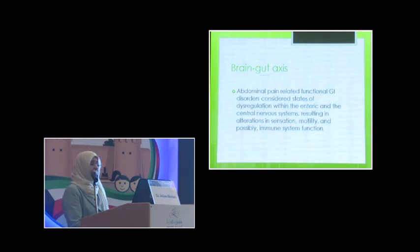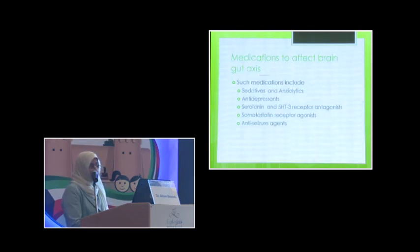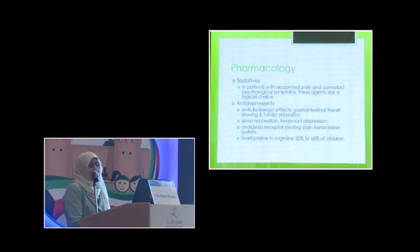The next category of medication deals mostly with the brain-gut axis. The idea is that abdominal pain-related functional gastrointestinal disorders are considered a state of dysregulation within the enteric and central nervous system resulting in alteration in sensation, motility, and possibly immune system. The antidepressants, along with their benefit of stabilizing mood, have anticholinergic side effects to the intestine and help the gastrointestinal system. They restore sleep. The oldest of all is amitriptyline, which has been used in migraine, and there are studies to prove that.